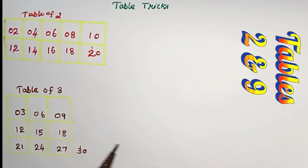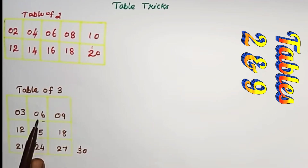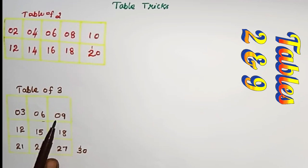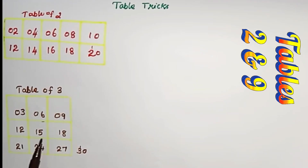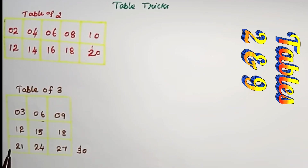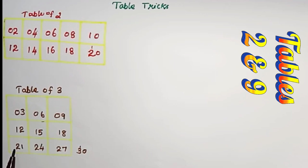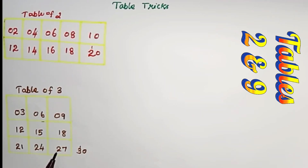Table of 3. 1 3 is 3. 2 3's are 6. 3 3's are 9. 3 4's are 12. 3 5's are 15. 3 6's are 18. 3 7's are 21. 3 8's are 24.